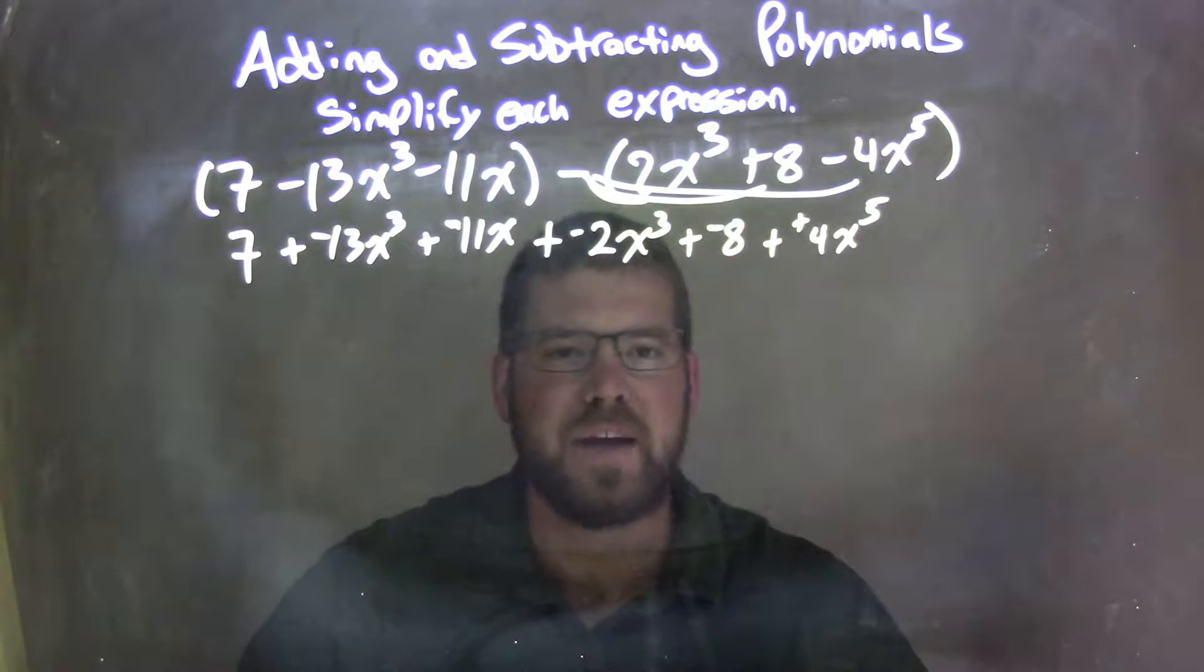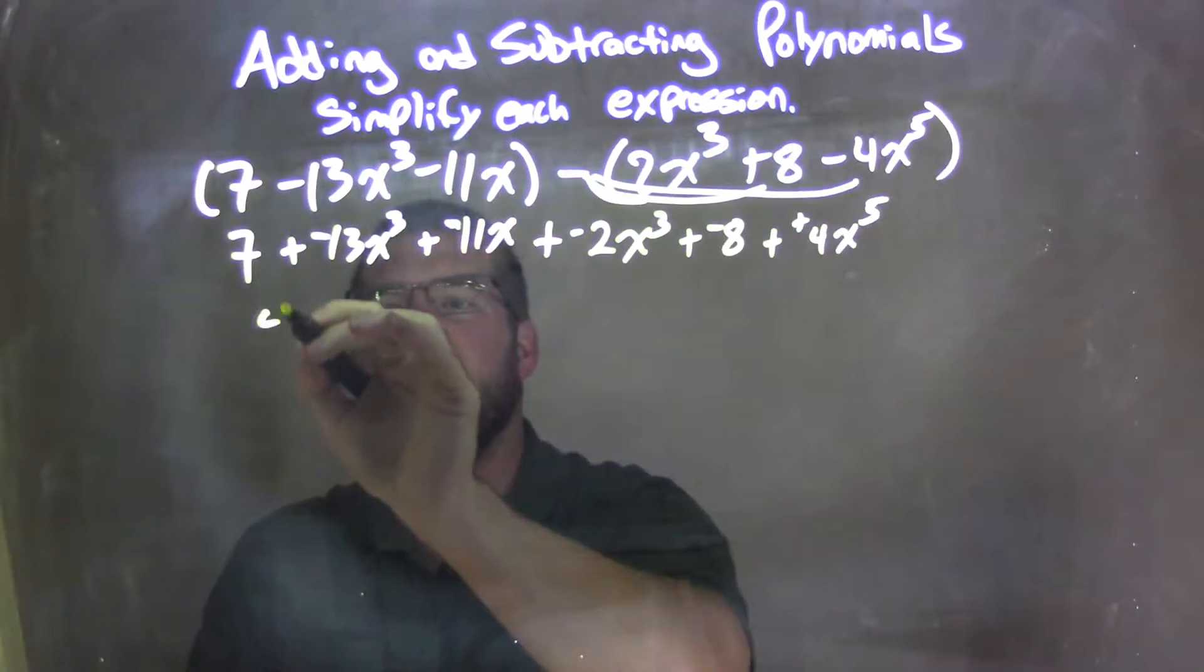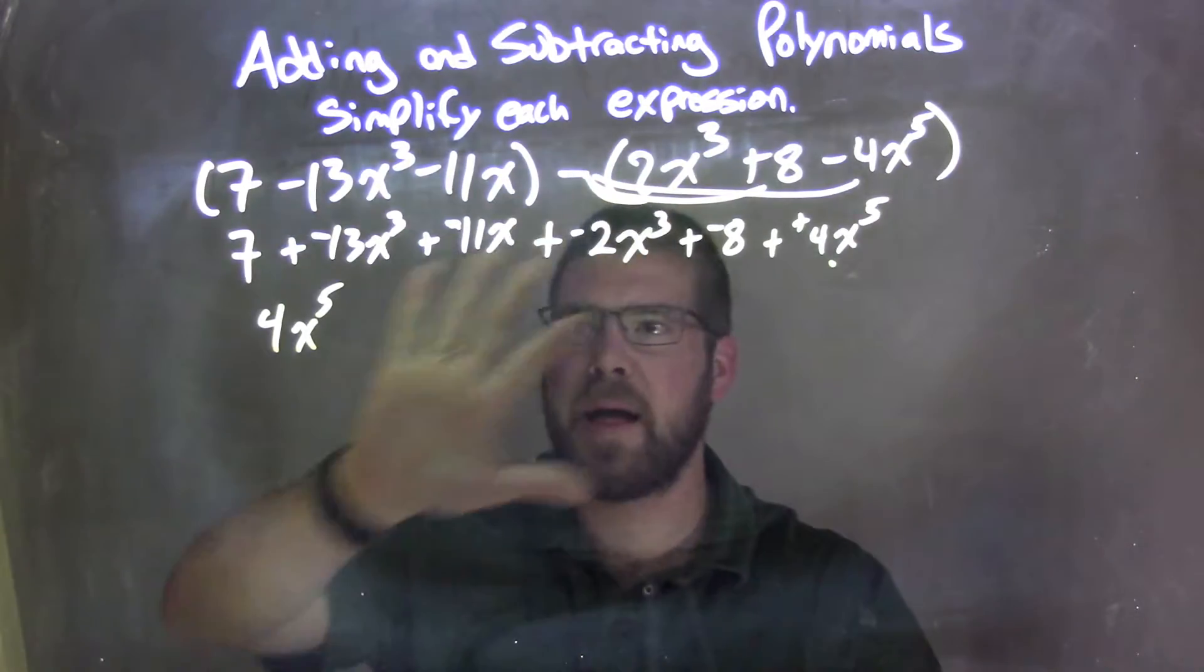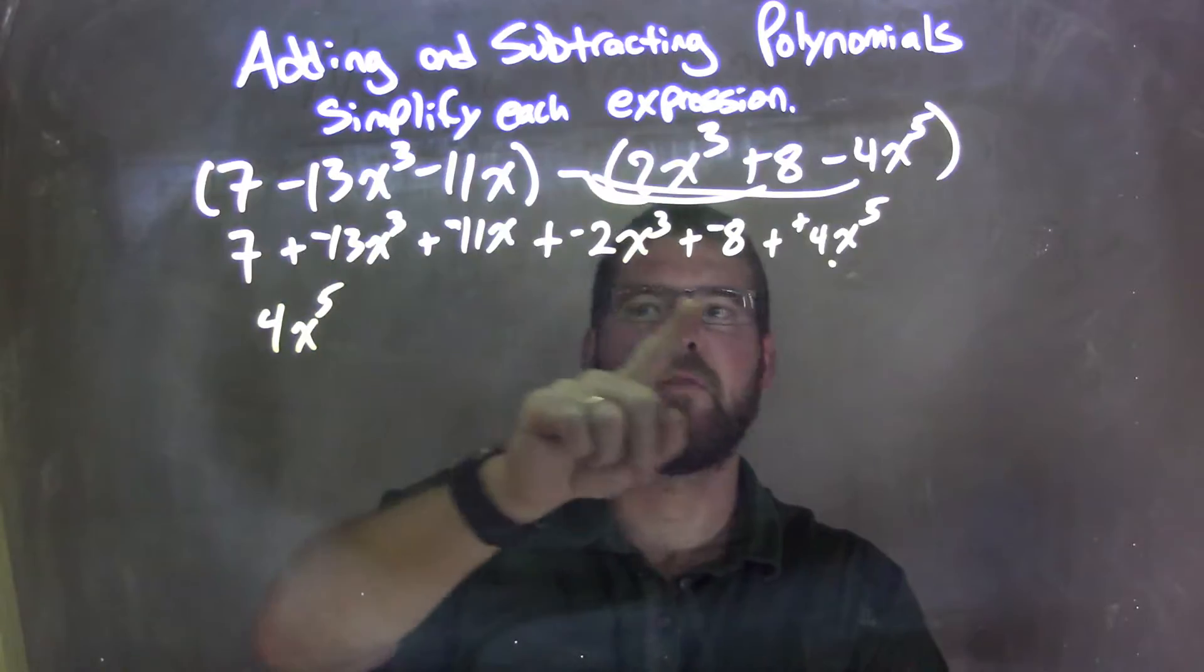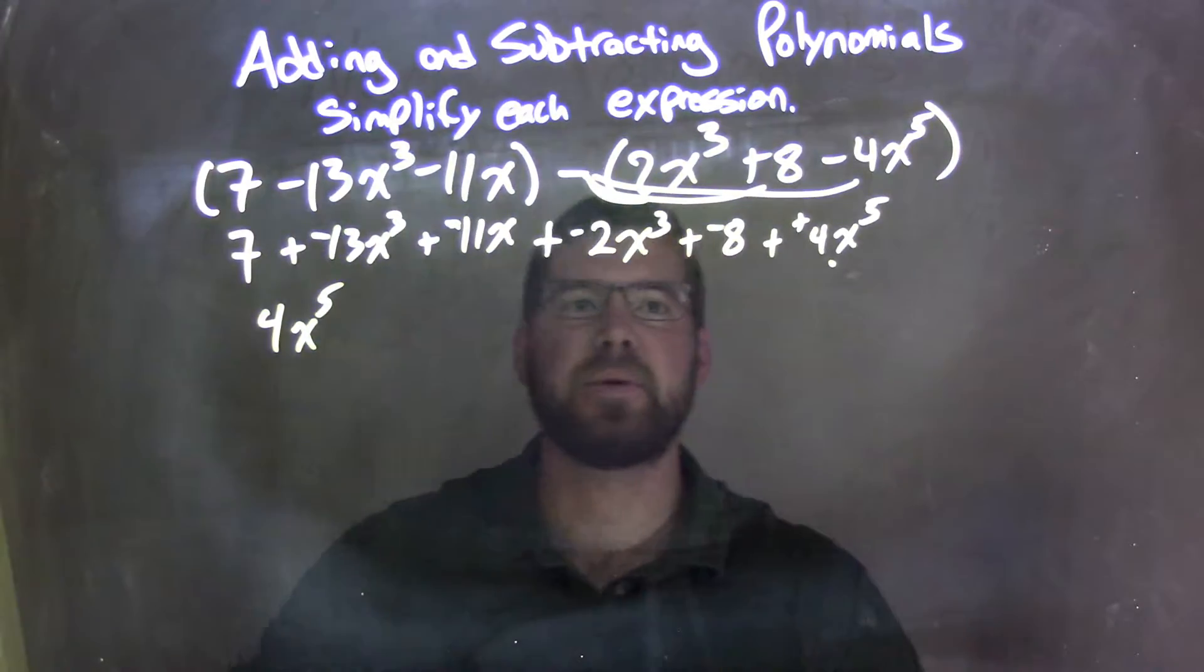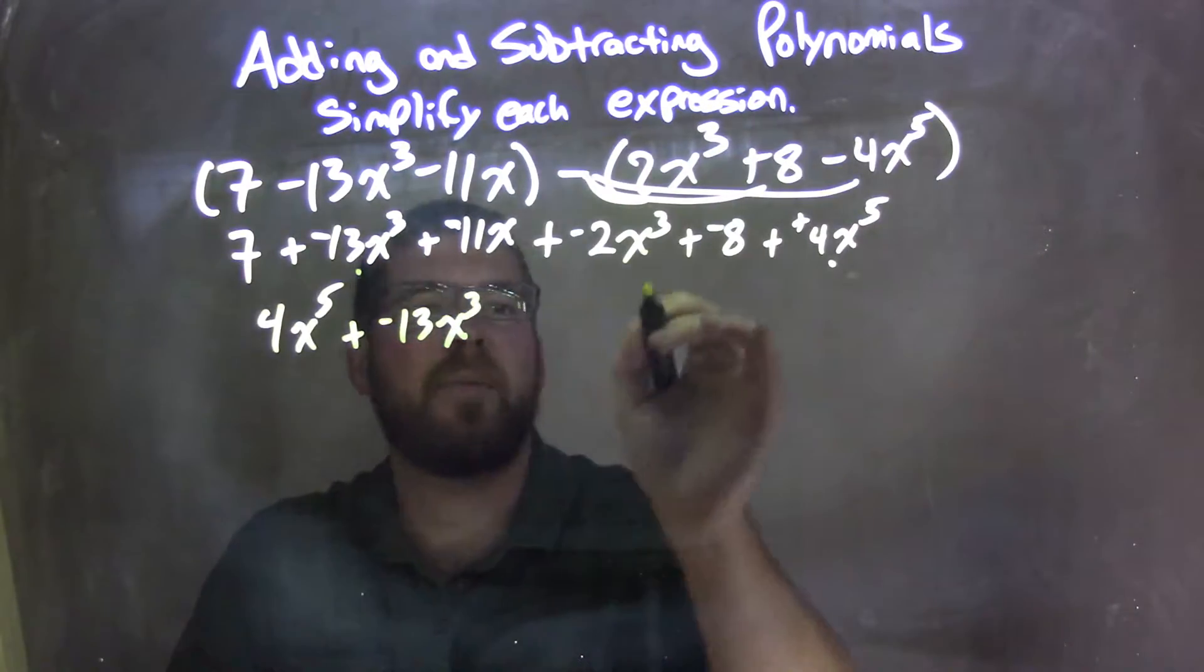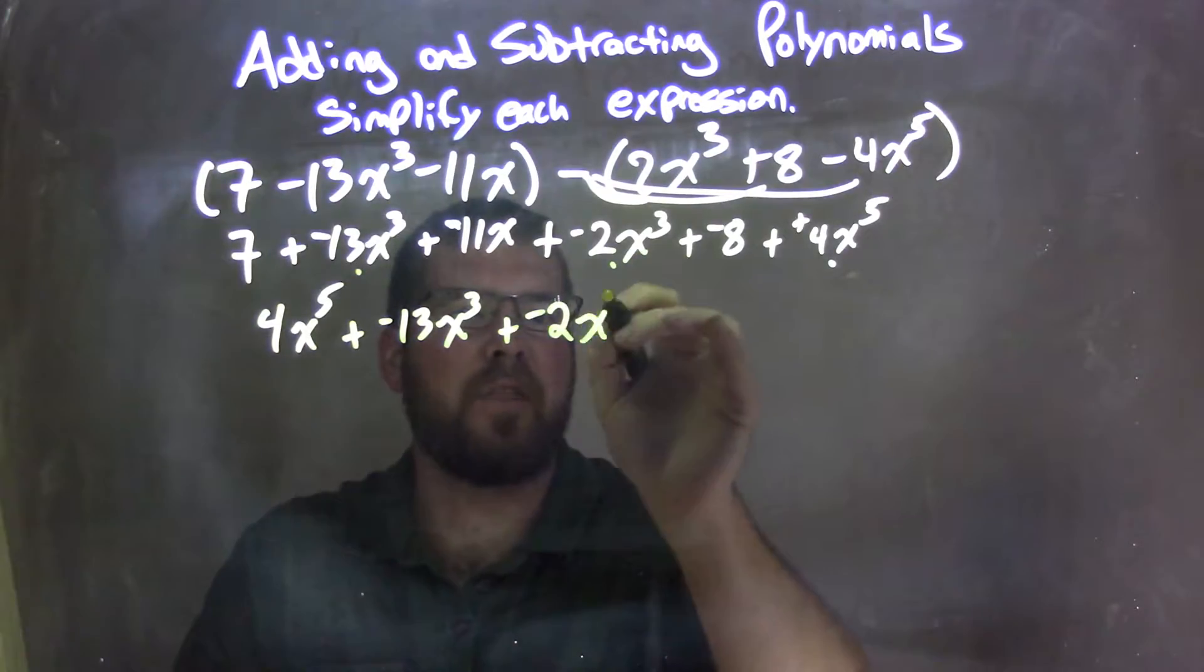Let's reorder this to add the highest degree first. Highest degree is the 5th power, it's 4x to the 5th. So I'm going to write 4x to the 5th here. I put a dot underneath there to say that I brought that term down. I don't see any 4th power. Third power, I see two. I have the negative 13x to the 3rd. So we have plus a negative 13x to the 3rd right there. I put a dot there, and the other one, plus a negative 2x to the 3rd.